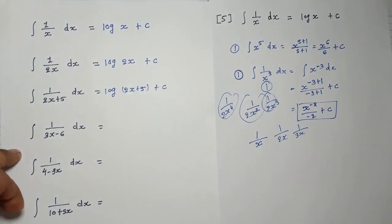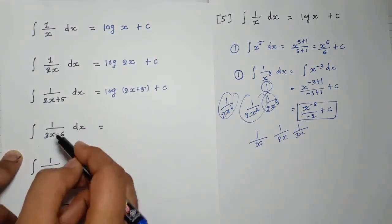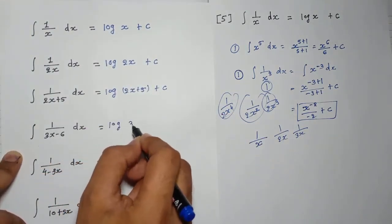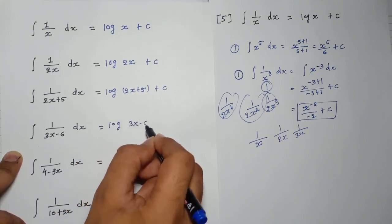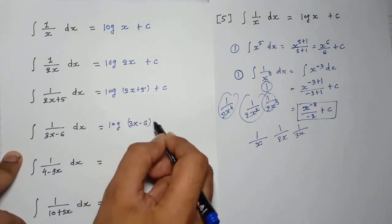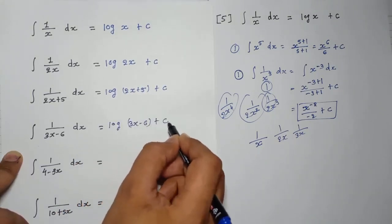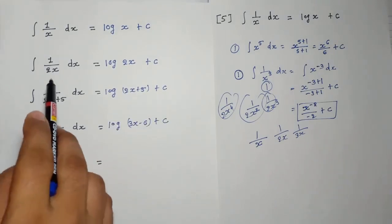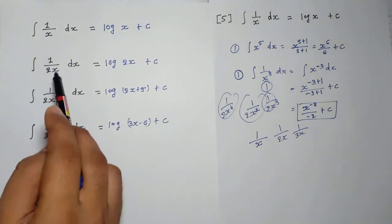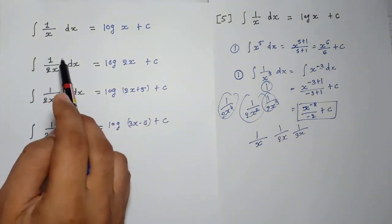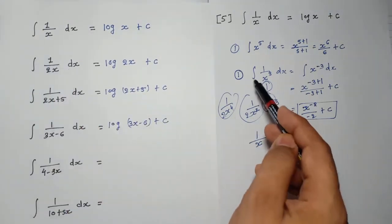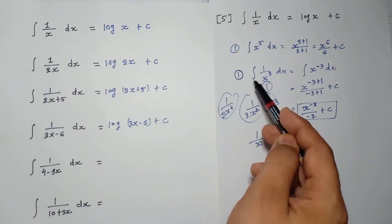1 divided by 3x minus 6 — its integration will be log(3x − 6) plus c. You can see that there is only x here. If x squared, x cubed, or x to the 4th is given, the first rule will be applied; otherwise rule number 5.